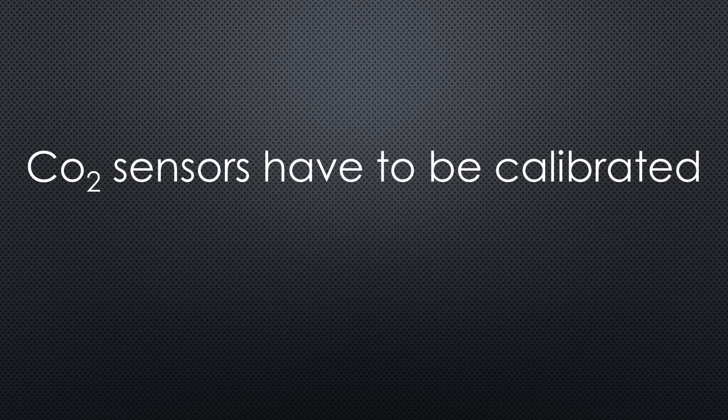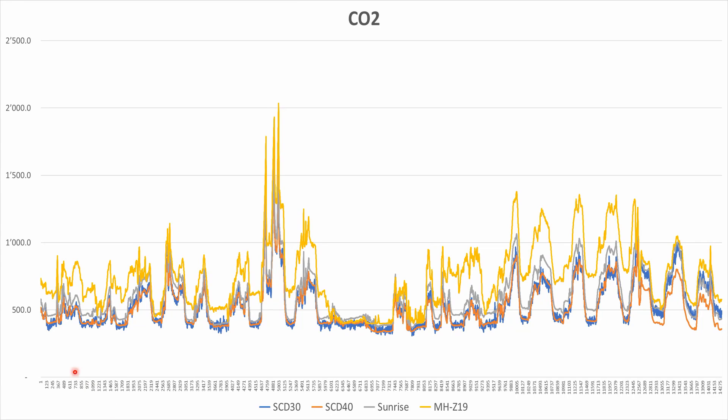For long-term stability, it has to be calibrated from time to time. The Sensirion and the Sunrise sensors have an automatic adjustment. For the MH-Z19, I'm not sure. Anyway, it should be possible for most rooms to determine the minimum value, for example during the night and set it to 410 ppm.